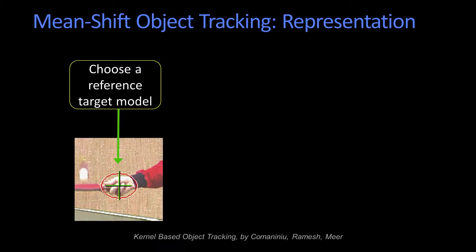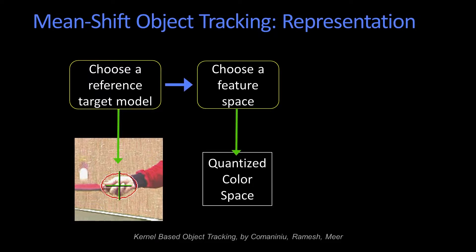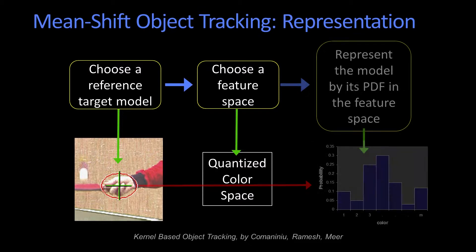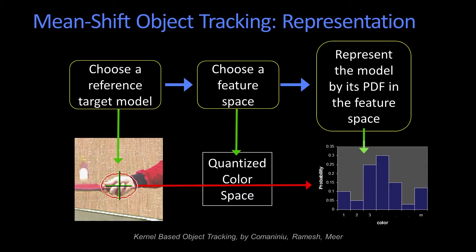The thing that makes this mean shift tracking is essentially what the model is and how we compare them. We have this initial area that we want to track, and we have to choose what the model is going to be. In mean shift, what we do is we choose a feature space that is the quantized color space. What that means is that we carve up the different RGB values into a histogram.